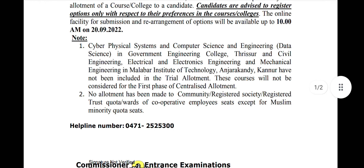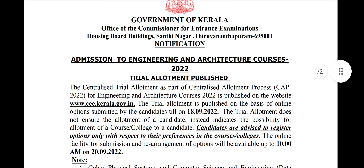In the final case, the option for Trial Allotment will be available for the first phase of Centralized Allotment. So, if you want to go to a college now, you will be able to get a trial allotment. Because it is a trial allotment, you will be able to get a rearrangement option.